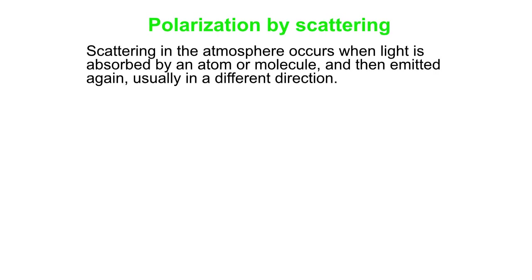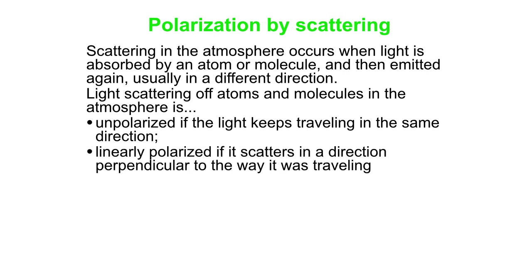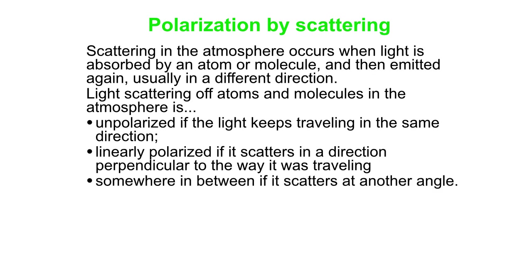Another way to polarize light — not just using dichroic materials — is in the atmosphere. Light comes in from the sun, hits atoms and molecules in the atmosphere, and gets scattered, meaning it gets absorbed briefly by the atom or molecule and then re-emitted, often in a different direction. The scattered light is unpolarized if re-emitted in the same direction it was traveling, linearly polarized if it scatters perpendicular to the original direction, and somewhere in between for intermediate angles.